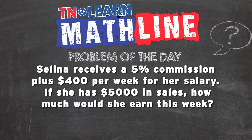Selina receives a 5% commission plus $400 per week for her salary. If she has $5,000 in sales, how much would she earn this week? We're looking at one week — she gets 5% commission plus $400 per week in her salary, she's going to do $5,000 in sales, and we want to know how much money does she have in her paycheck.